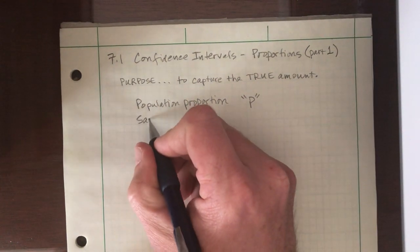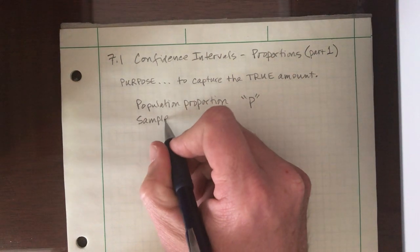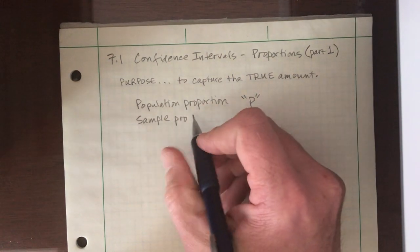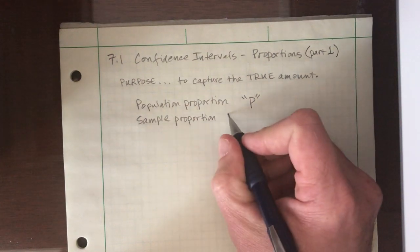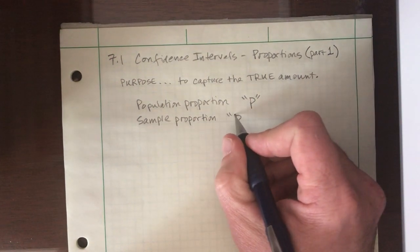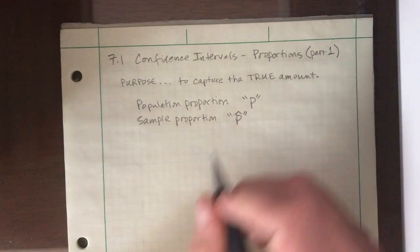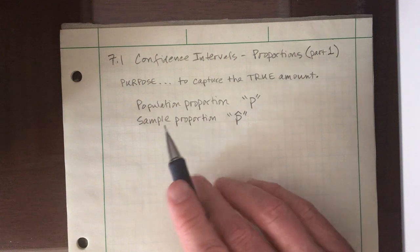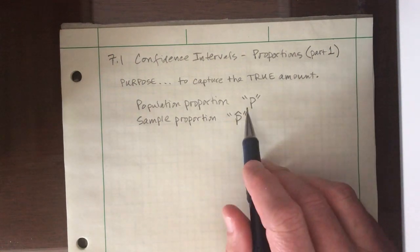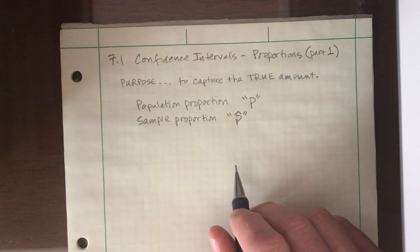But we know we work mostly with samples and we have something called a sample proportion, which is P hat. So it's important that we make a distinction between the word population versus sample proportion and each symbol represents those.